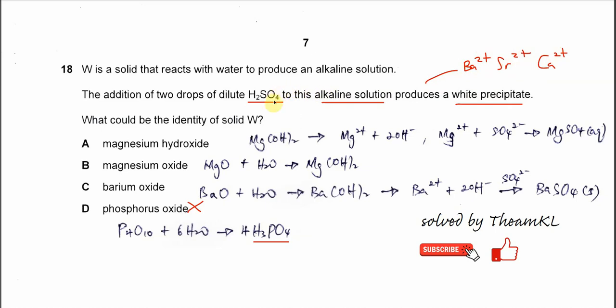Because when the sulfate reacts with these three cations, it can form white precipitate. Now what could be the identity of solid W?